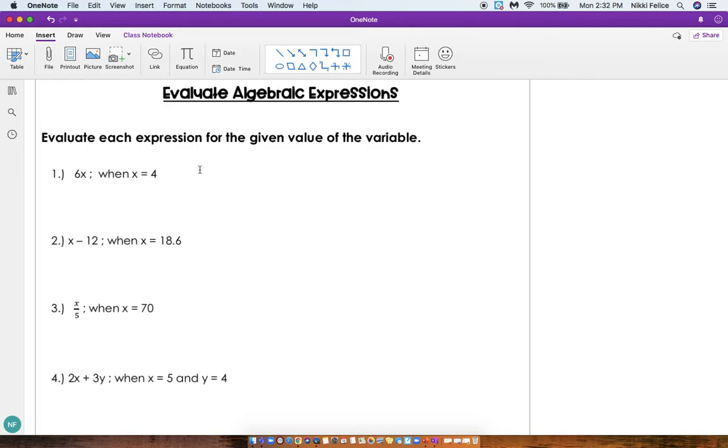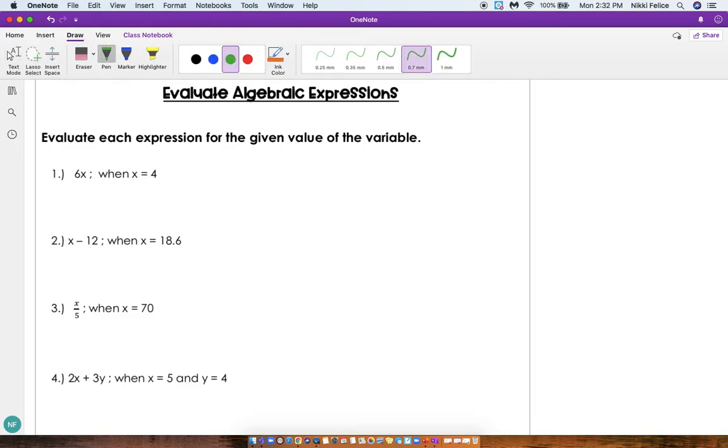Let's take a look at example one. My expression is 6x. Now we know that means 6 times x. But now I want to evaluate it when x equals 4. So I'm going to take this 4 and substitute it in for the x. So instead of 6 times x, we're going to do 6 times 4, which we know is 24. So when we evaluate, we are given the value of the variable and we can actually solve this expression.